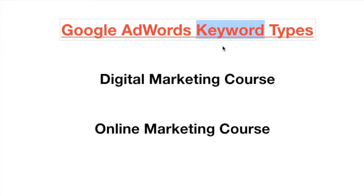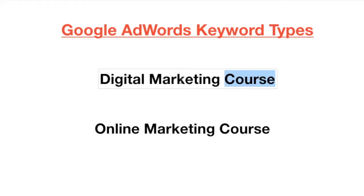Suppose you've made a course on digital marketing - it's a paid course and you want to sell it to earn money. You would tell Google AdWords: whenever someone searches for 'digital marketing course,' my advertisement should show on the search results.